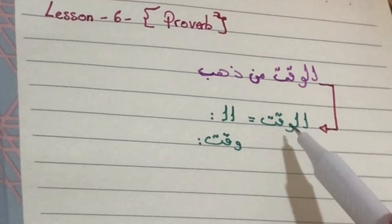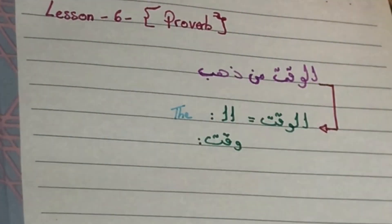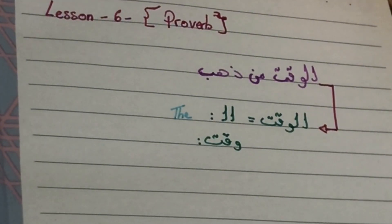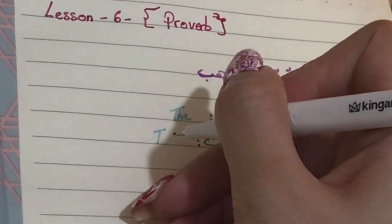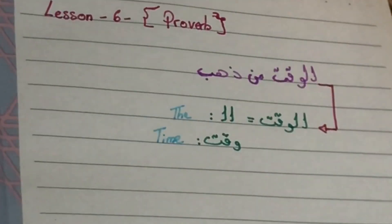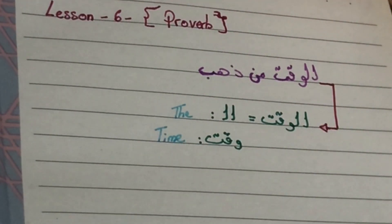As you all know, al is the. In English, it just means the. Al-waqtu is time. Time. The time. Al-waqtu, the time.